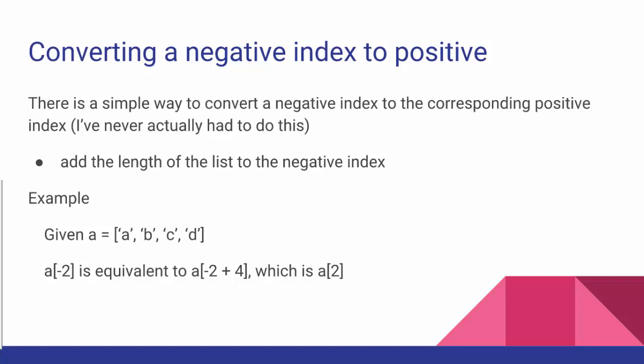For example, if we have a list named A containing four items: A, B, C, and D. Then A[-2] is equivalent to negative 2 plus 4, 4 being the length of the list. And that gives us a positive index of 2.